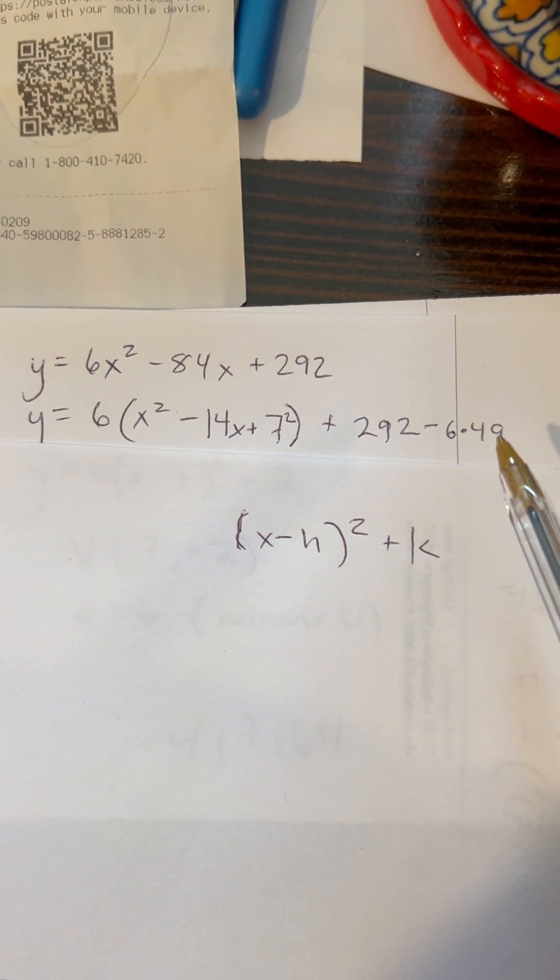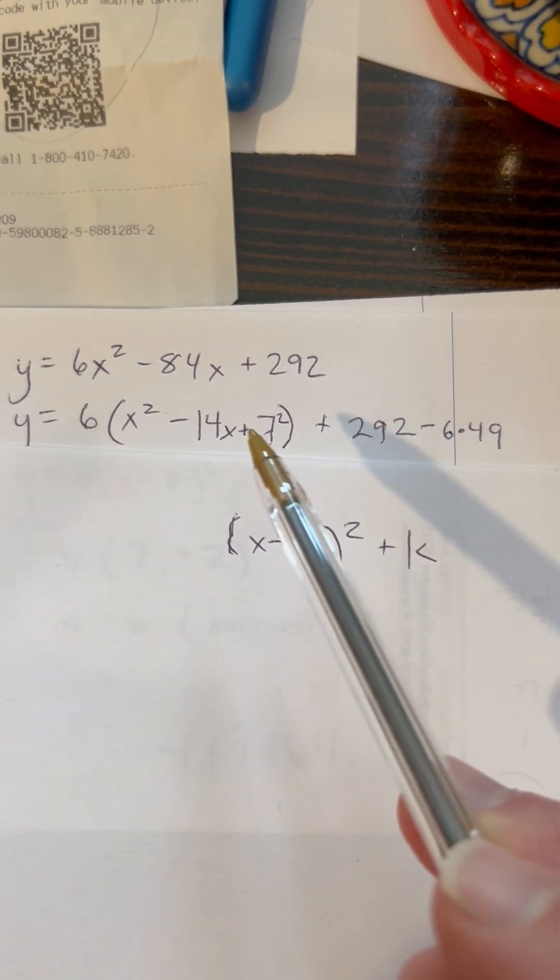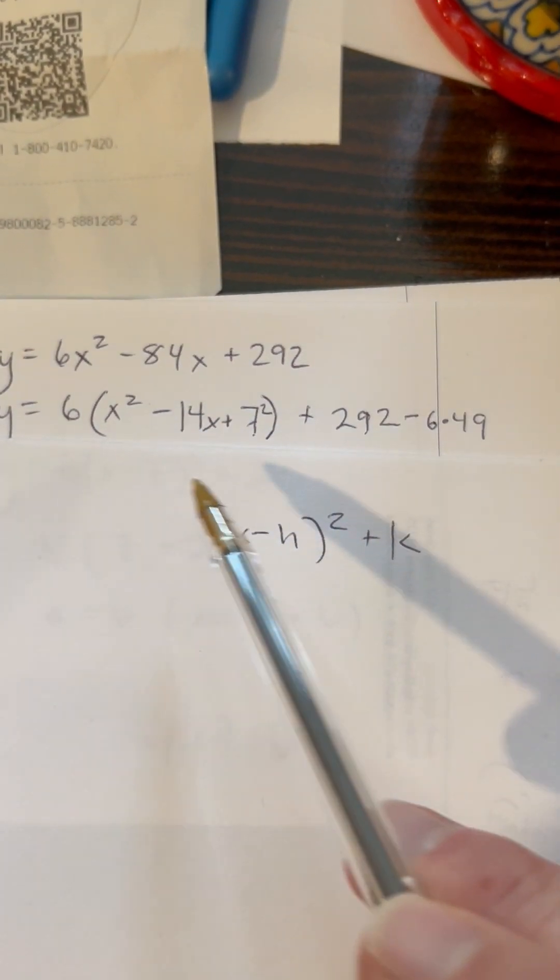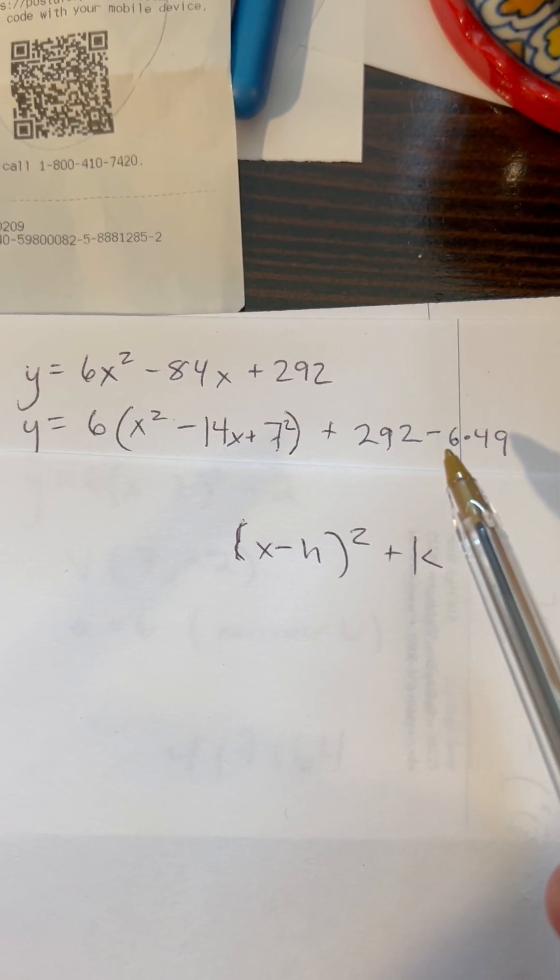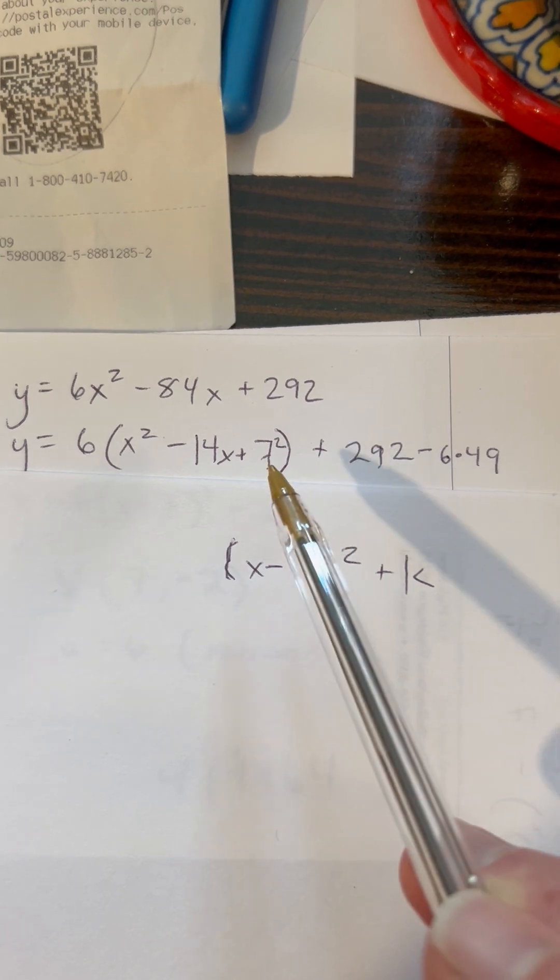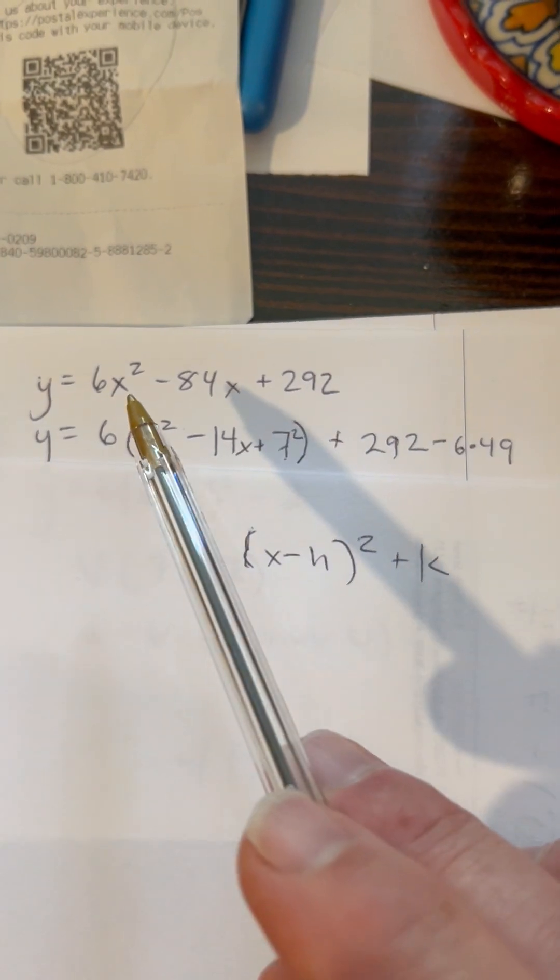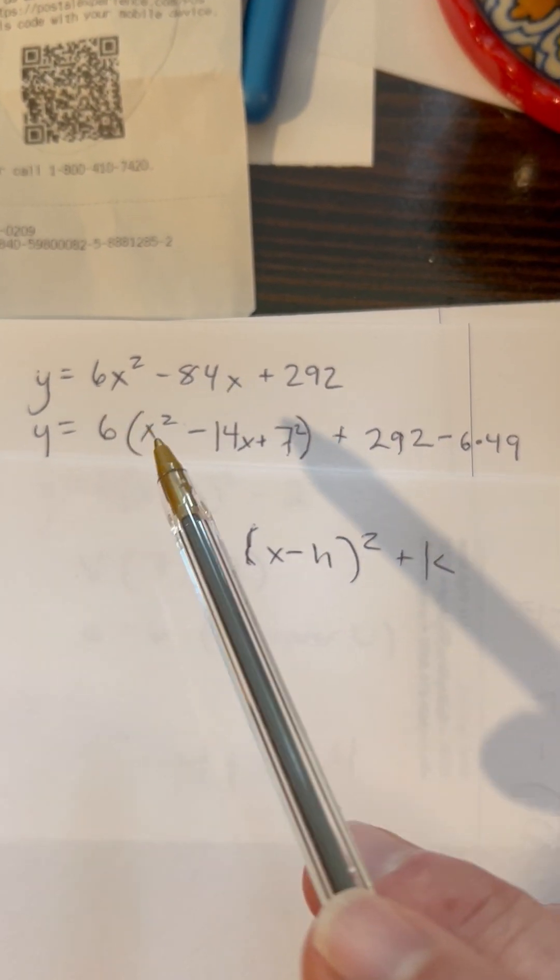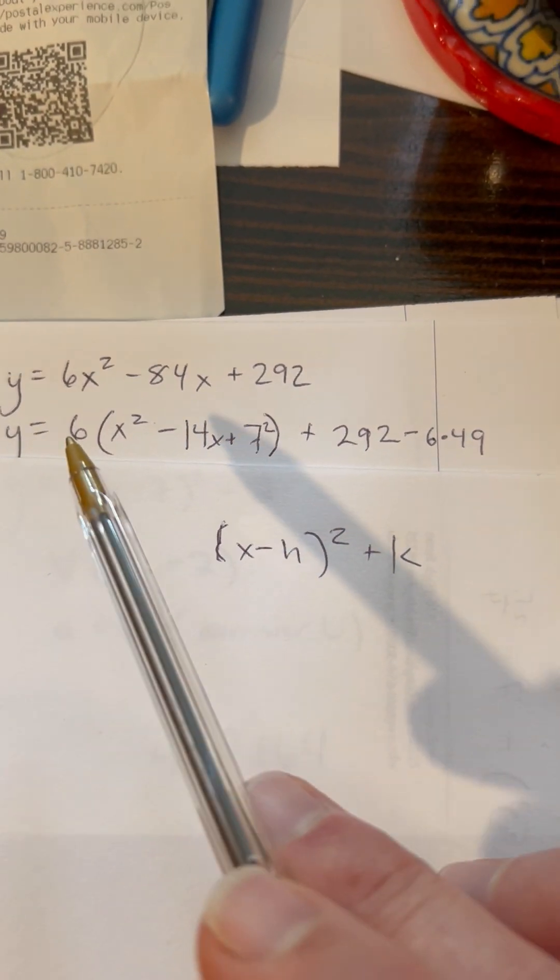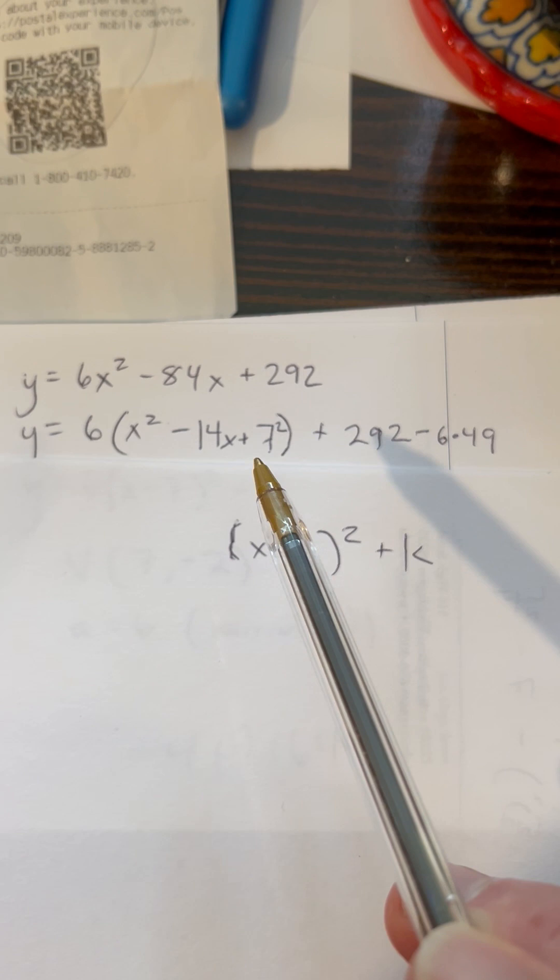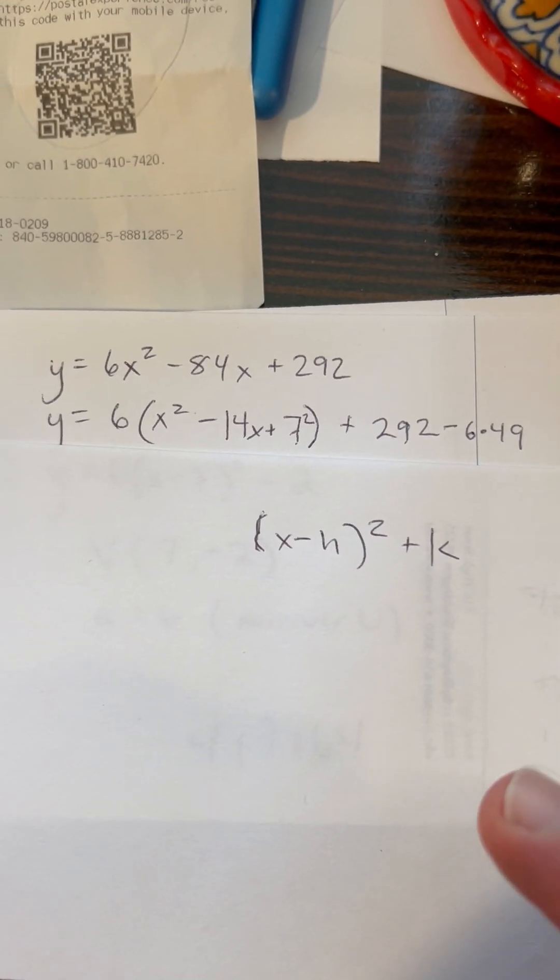And what's this? Well, there's the 49. I recognize that. But it's not just 49 that I added to the equation over here. It's 6 times 49. So I have to subtract 6 times 49 here. That's the main thing to remember when you're dealing with a lead coefficient that's not 1. When I factor that number out, I have to remember to distribute it back in here when I'm counteracting the piece that I added to the equation to make it complete the square.